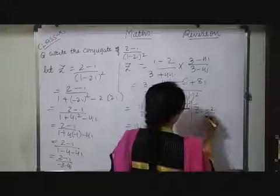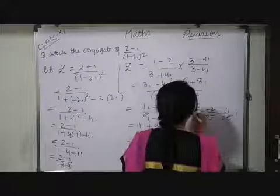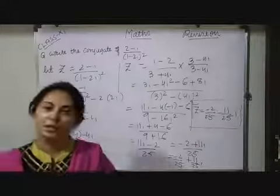So, that is which is equals to minus 2 upon 25 minus 11 upon 25i. So, students hope it understood to you. Thank you.